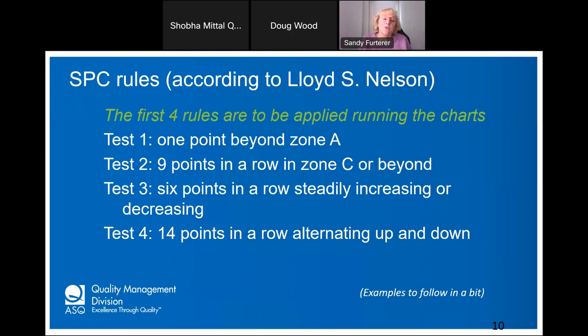Sandy also shares that she personally used SPC when trying to conceive her three children. She tracked her temperature to identify ovulation — and it worked. Her temperature went out of control, dropping below the lower control limit, signaling ovulation. She shared the control chart with her doctor, who simply confirmed she was ovulating — not quite as excited about the SPC application as she was. Three kids later, it proved successful.